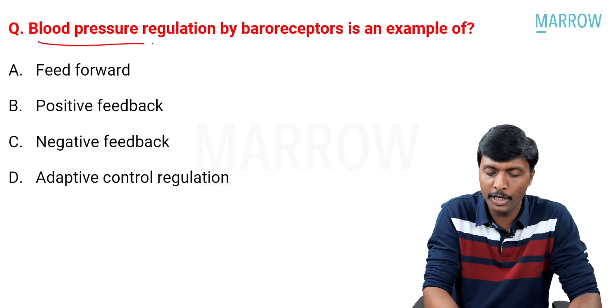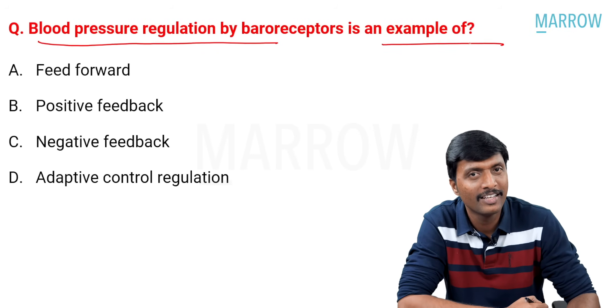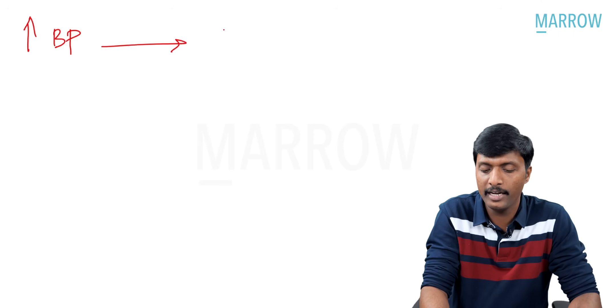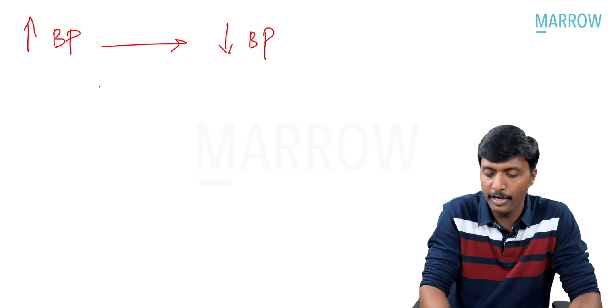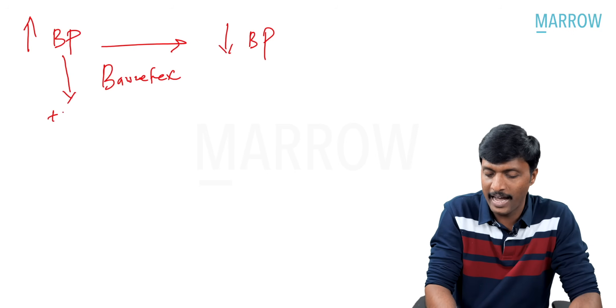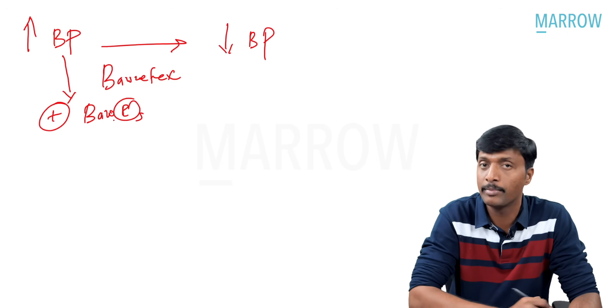Next. Blood pressure regulation by baroreceptors is an example of. Important concept, guys. Increase in blood pressure will be quickly followed by a reflex decrease in blood pressure. We call this reflex as baroreflex. Increase in blood pressure is going to activate our, which group of receptors, guys? Baroreceptors.